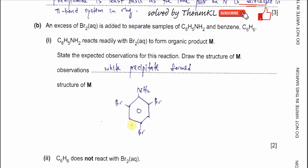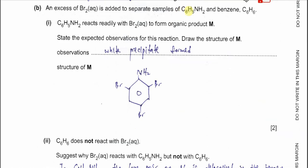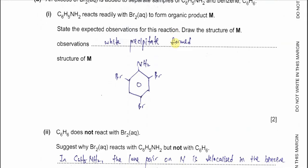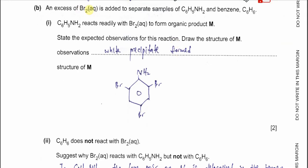For Part B, an excess of bromine is added to separate samples of phenylamine and benzene. Phenylamine reacts readily with bromine water to form product M. The lone pair on nitrogen delocalizes into the benzene ring, making the ring more electron-rich and more active. Therefore, phenylamine more readily undergoes electrophilic substitution with bromine.